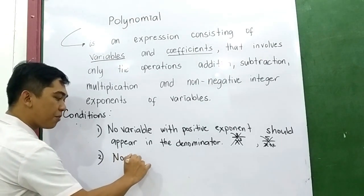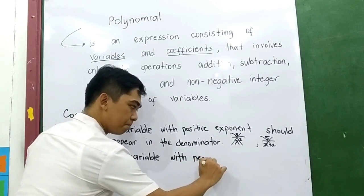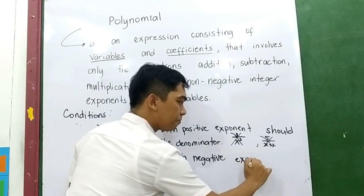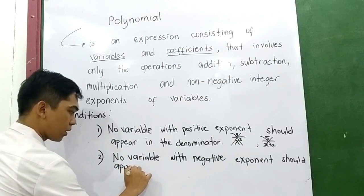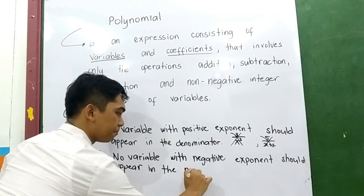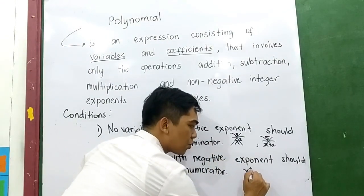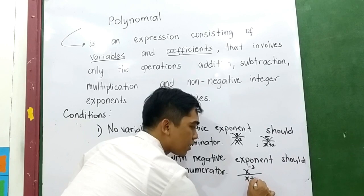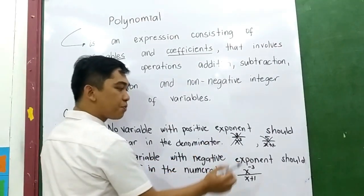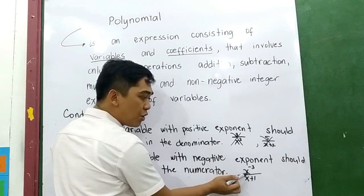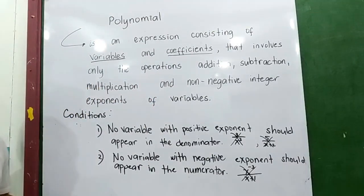Second condition: no variable with negative exponent should appear in the numerator. So if the expression is x raised to negative 3 over (x plus 1), in our numerator we have x raised to negative 3. That means the condition is not satisfied, so the expression is not a polynomial.